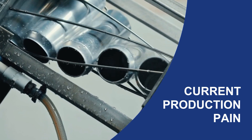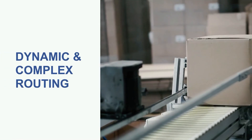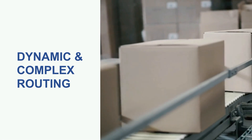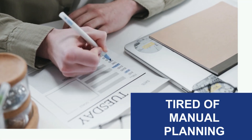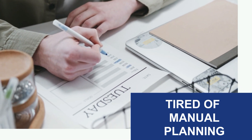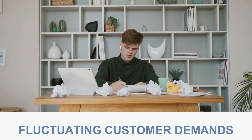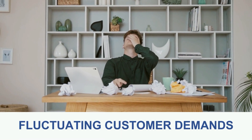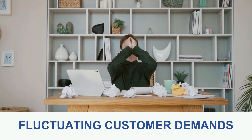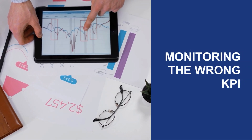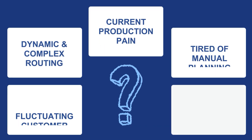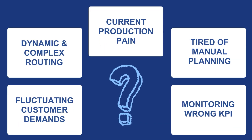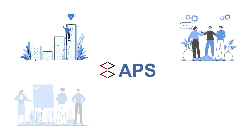High-mix and low-volume production processes make your production routing difficult to map or plan. Don't you wish there is a system for detailed planning and scheduling instead of manual planning? Feeling scared and frustrated by sudden rush orders and fluctuating customer demands? Need a hand for better decision making and improvements through different KPI analysis?